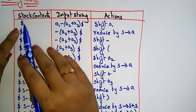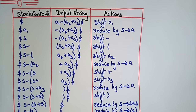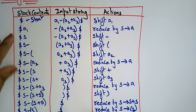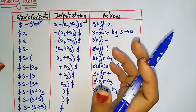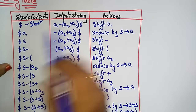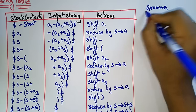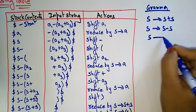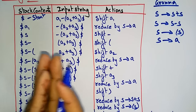The stack starts with an empty dollar symbol. The input string a1 minus a2 plus a3 is placed in the input buffer ending with dollar. The start symbol is S, and the string has to be reduced to S. To recap, our grammar is: S → S plus S, S → S minus S, S → S, and S → a.